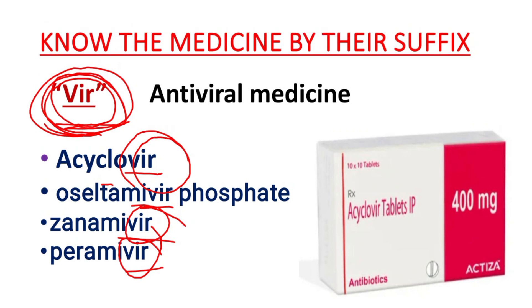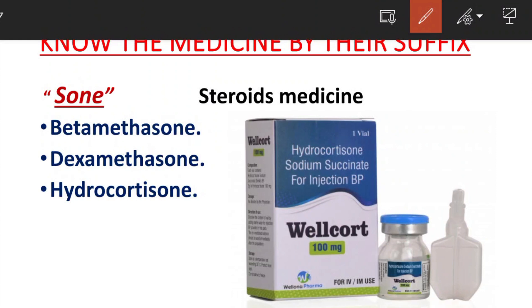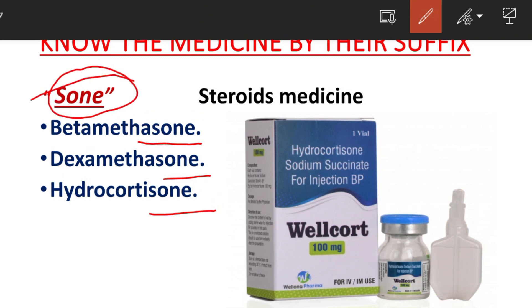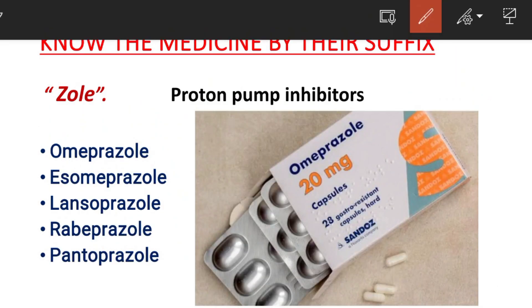Next is the suffix '-zone'. Zone is used for steroid medications. Common examples are Dexamethasone and Hydrocortisone. Those are steroid medications that can be easily identified by the suffix '-zone', which is common for the maximum cases of steroid drugs.